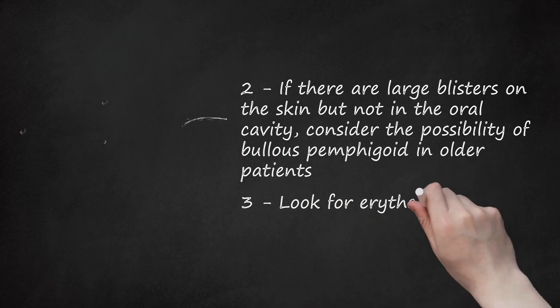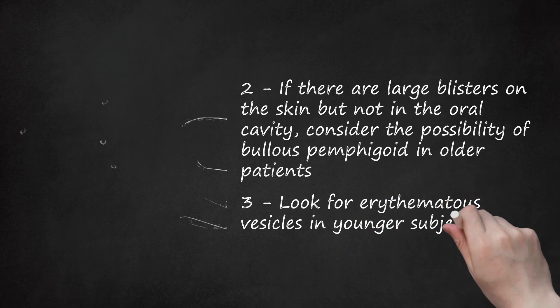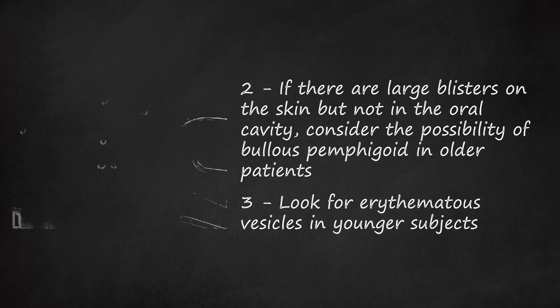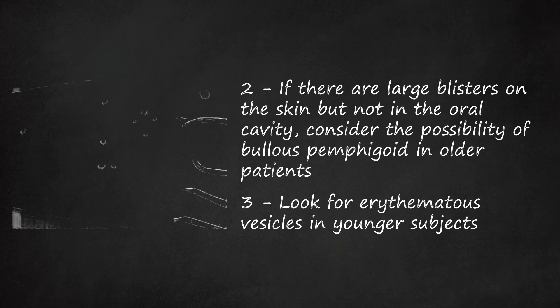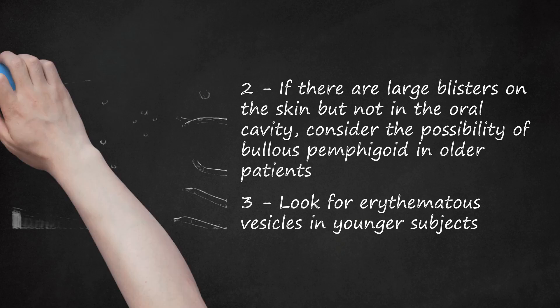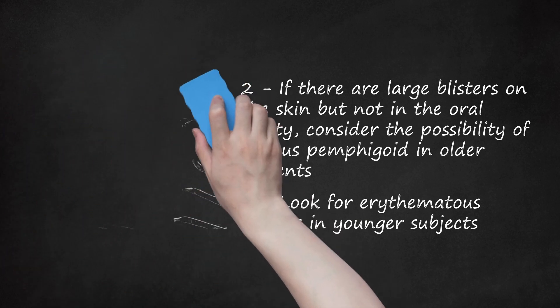Step 3: Look for erythematous vesicles in younger subjects. This disease is common between the ages of 20 to 40 years. This disorder has a strong association with gluten-induced enteritis, or celiac disease. In spite of the apparent link between the two disorders, removal of gluten from the diet does not improve the dermatitis. It is mediated by the action of immunoglobulin A instead of immunoglobulin G. Clinically speaking, this is a chronic disease with relapses and remission. Treatment is also by suppression of the overactive immune system with steroids.